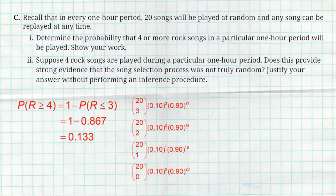So here's that exact approach. To find the probability that R is greater than or equal to four, I'm going to do one minus the probability that R is less than or equal to three. So there's my work for 20 choose three, three rock songs, 17 not. Two rock songs, 18 not. One rock song, 19 not. Zero rock songs, 20 not. And that probability I calculated to be 0.867. So do one minus that, I get a probability 0.133 or 13.3% chance that four or more rock songs are played.